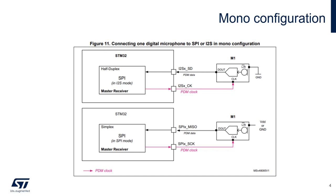Data acquired in this way can be converted to the PCM format using the PDM to PCM library for STM32. Please note that depending on the peripheral block version some constraints on the generated clock should be considered. For more information on this aspect you can refer to the fifth chapter of this video series on STM32 peripherals for MEMS digital microphones.